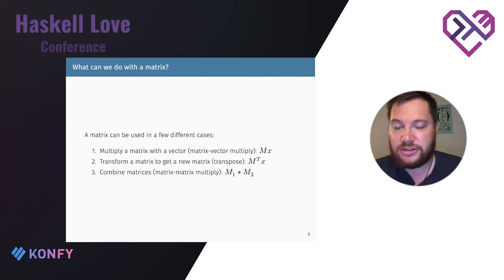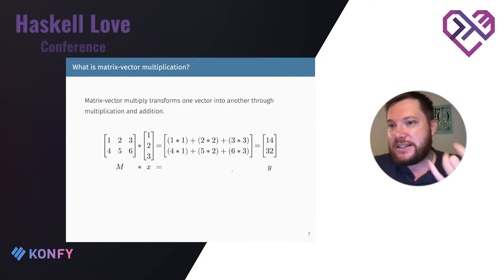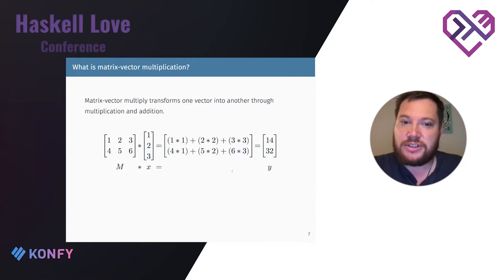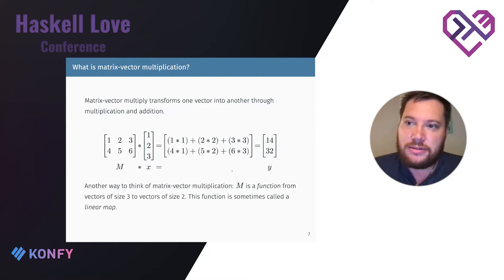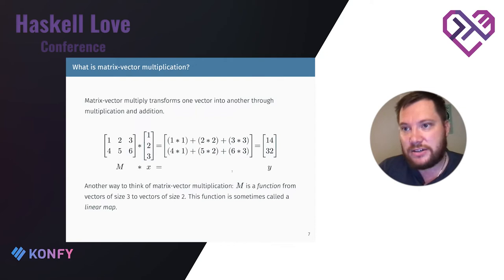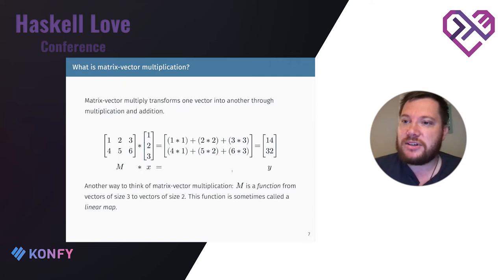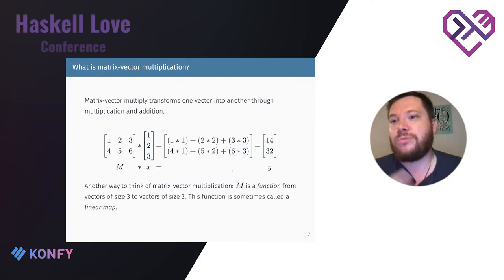As a reminder, matrix-vector multiplication takes each row of a matrix, element-wise multiplies it by the vector, sums those values, and produces a new element in the resulting vector. But another way to think about it: consider the matrix M as a function that takes in vectors of size three and returns vectors of size two. This function is sometimes called a linear map — from one vector space to another vector space of a different size.